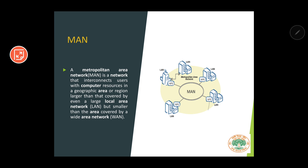In a MAN, there may be many small LANs. For example, you can see five buildings where all computers within each building are connected by a LAN. If you want to connect all computers spread across a particular city, you will require MAN — the Metropolitan Area Network.